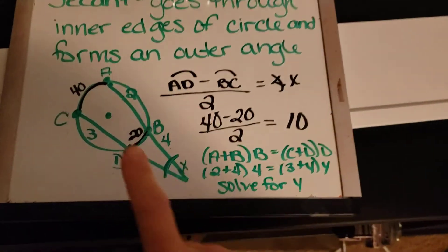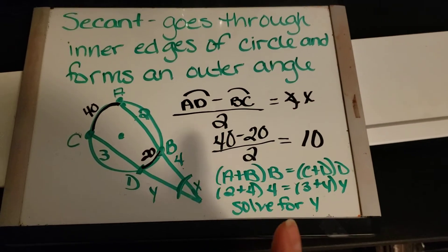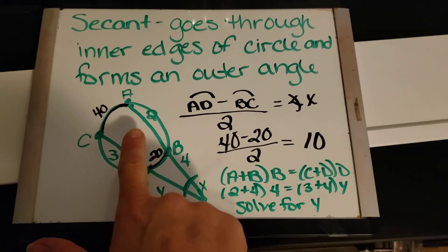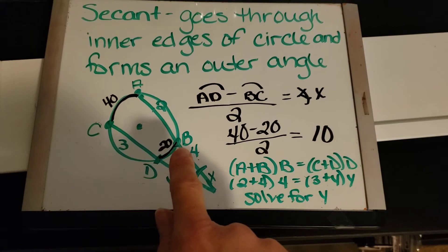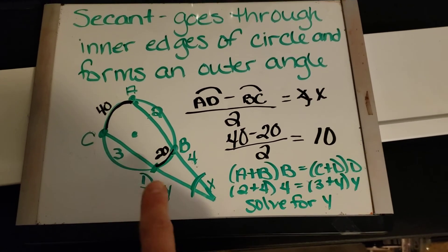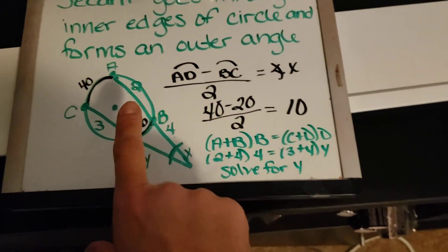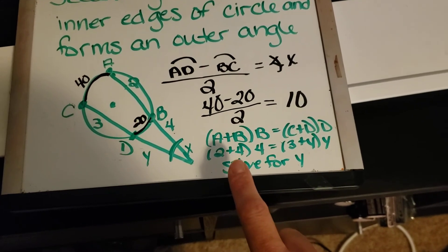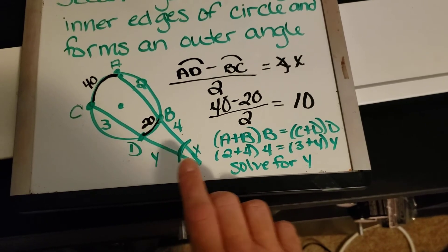Also you'll see where you'll have these line segments given to you and you'll have an X or a Y. So that formula would be AB times B is equal to CD times D which I've done here. So if AB is 2 and B is 4, you see that there. And if CD is 3 and D is Y, you see that there and you would solve for Y.